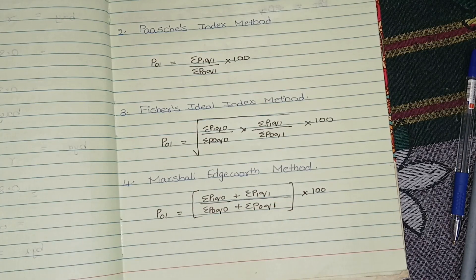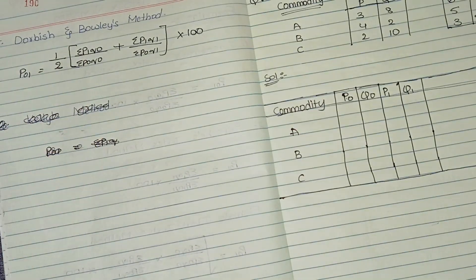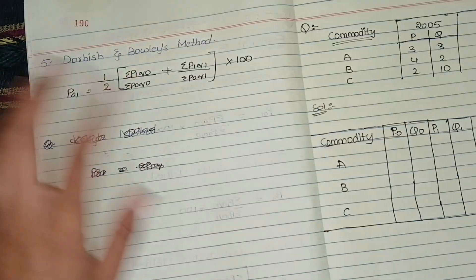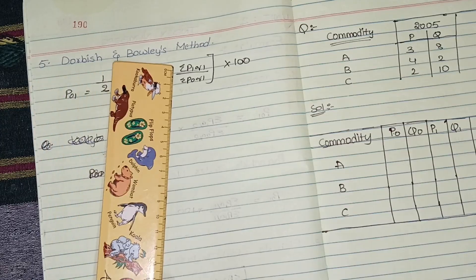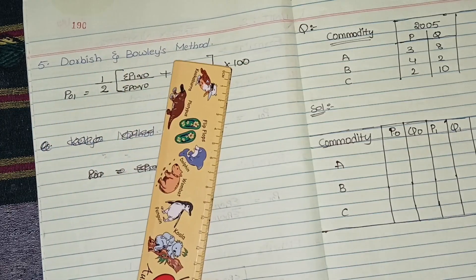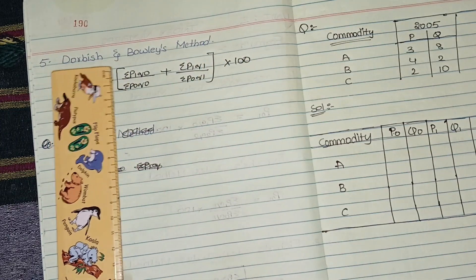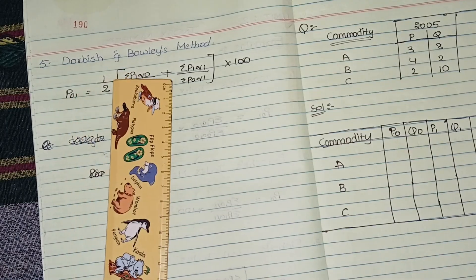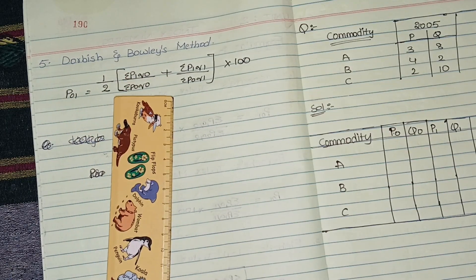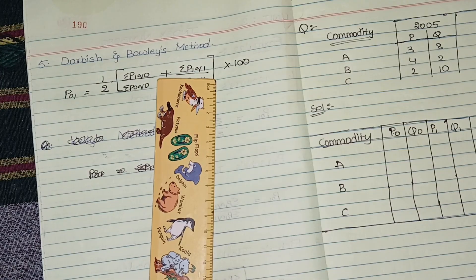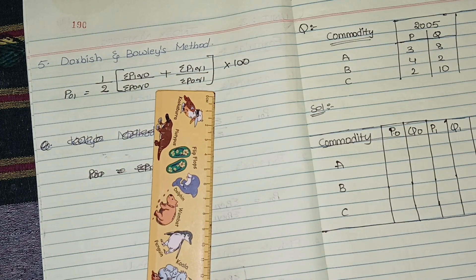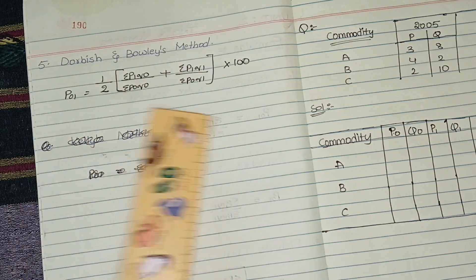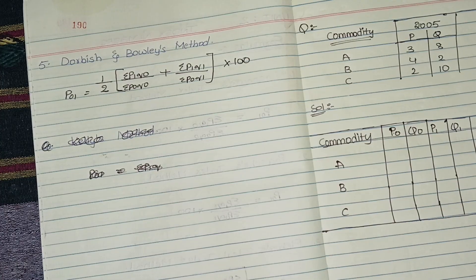The last formula is Dorbish or Bowley's method — they can ask either name, it's one and the same. The formula is: ½ × [(Σp1q0/Σp0q0) + (Σp1q1/Σp0q1)] × 100. So these are the five formulas you need to learn; without learning these five formulas you cannot proceed.